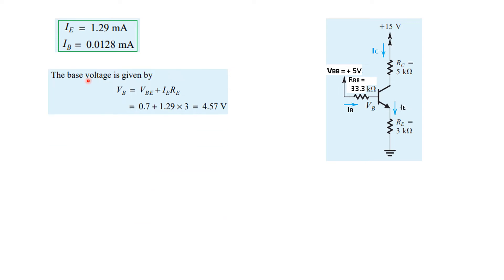We calculate VB using the formula VB = VBE + IE·RE, where VBE = 0.7V and RE = 3kΩ. This gives VB equal to 4.57V. We then calculate VE as IE multiplied by RE, giving VE equal to 3.87V.